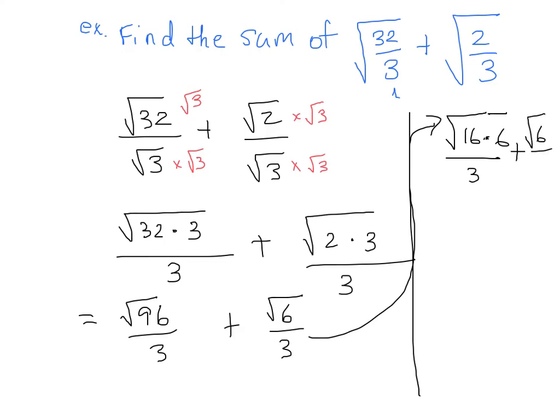root 6 over 3. Almost there. Now, root 16 is actually 4, so we can have here 4 root 6 over 3 plus root 6 over 3.